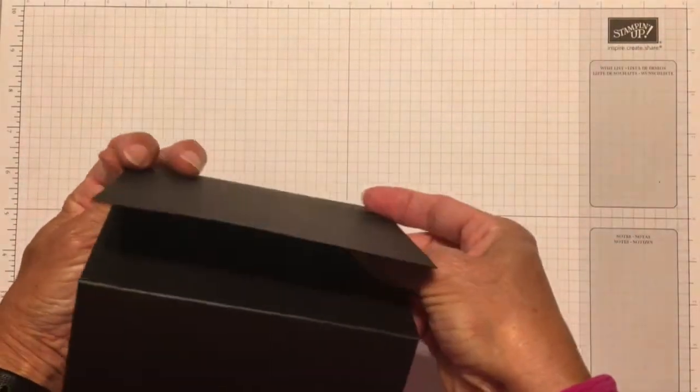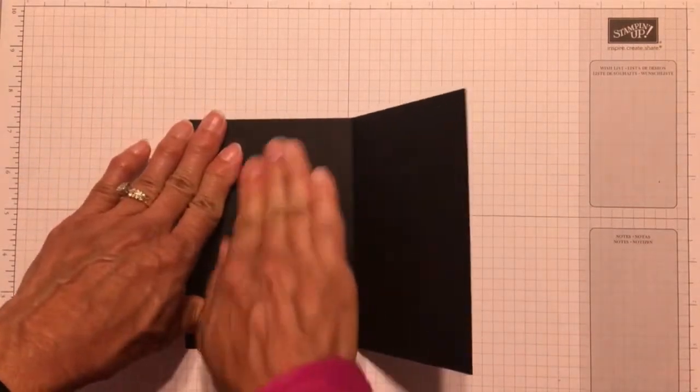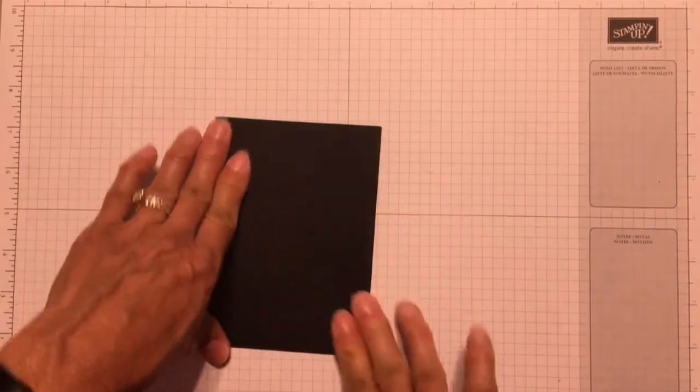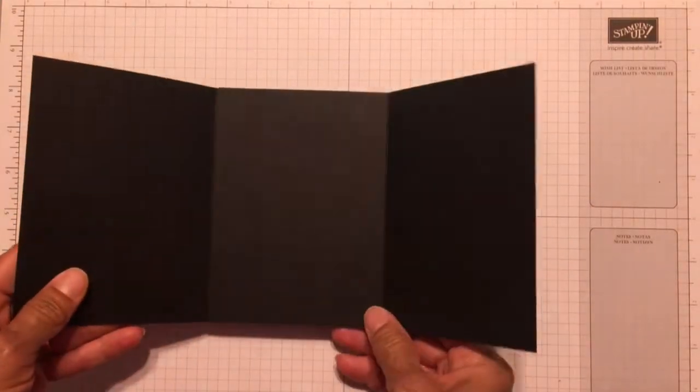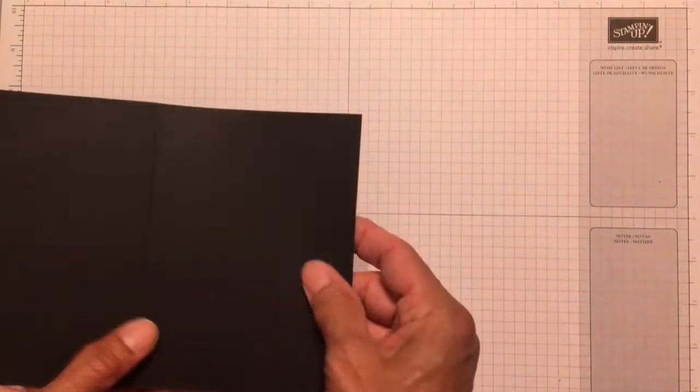When you're doing the card base this way, you could make it a full 4.25 inches by 5.5, so that it would be a standard card size. But because you're essentially putting two cards together, it gets a little bit bulky, and you may have a little trouble getting it into a standard size envelope.